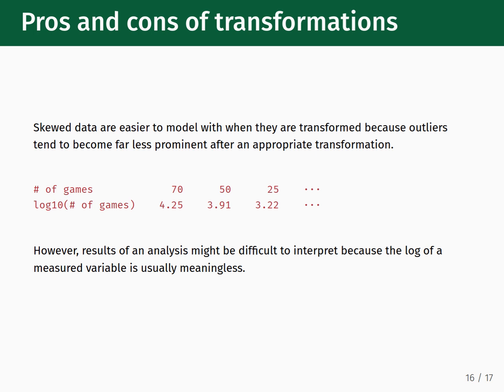In the table below, we see what happens numerically to some of the data points in the example we considered. In the original dataset, the data points of 70 games attended, 50 games attended, and 25 games attended are quite different from one another. However, after applying a log10 transformation, those values become 4.25, 3.91, and 3.22, respectively, which have much less variation between them. While this seemingly solves our problem, we need to be careful. The results of an analysis based on the log transformed data may be difficult to interpret because the log of a measured variable is usually meaningless.